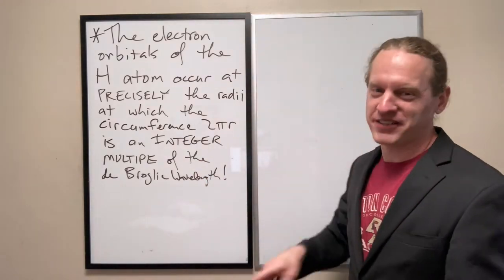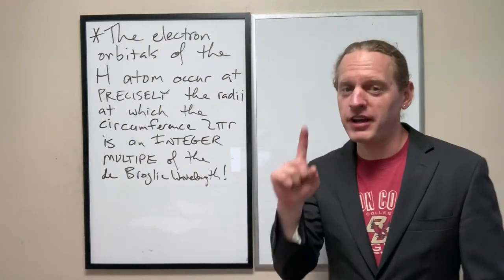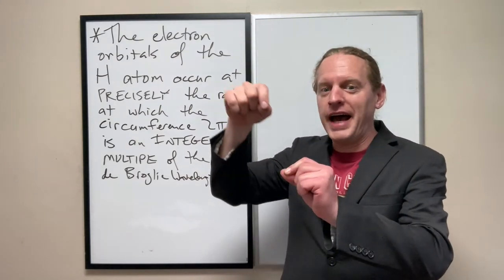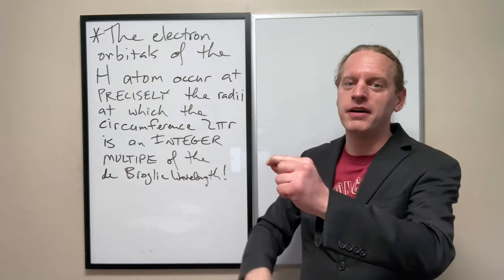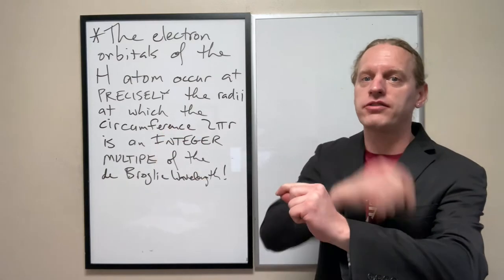Now we can see exactly what that 1 means. Energy level 1 is precisely the distance that the electron would have to be to have exactly one de Broglie wavelength around in a circle.